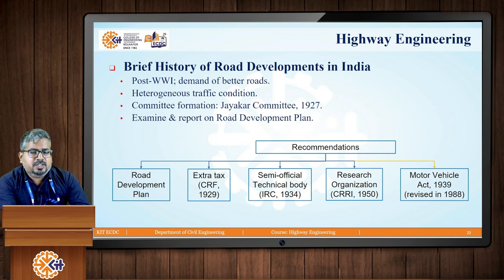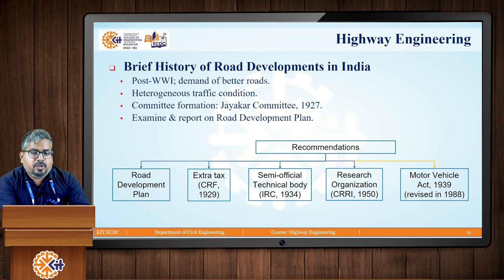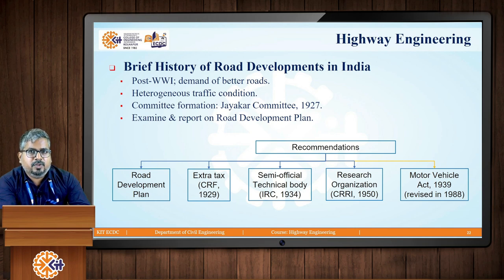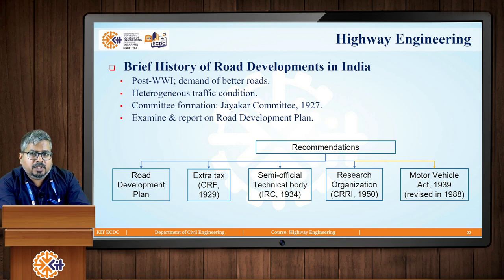The road development plans each covered a span of 20 years. We will be discussing three road development plans: the Nagpur Road Development Plan, the Bombay Road Development Plan, and the Lucknow Road Development Plan. Regarding the Central Road Fund, a tax was imposed on road users based on the fuel they used, introduced in 1929, to fund the improvement of existing roads. The IRC's Highway Research Board (HRB) was responsible for carrying out all technical activities related to the IRC.